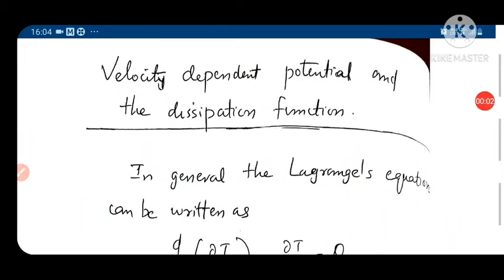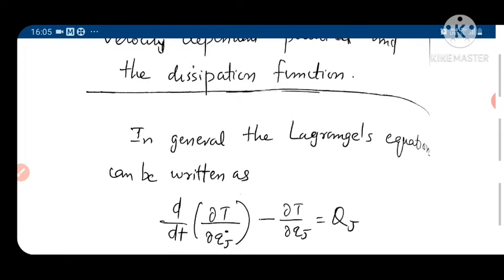Hi everybody. Today we look at the velocity-dependent potential. We have already seen conservative systems where the potential does not depend upon the velocity — it depends only on the generalized coordinates of the system. But here we consider a case of potential depending upon the velocity.